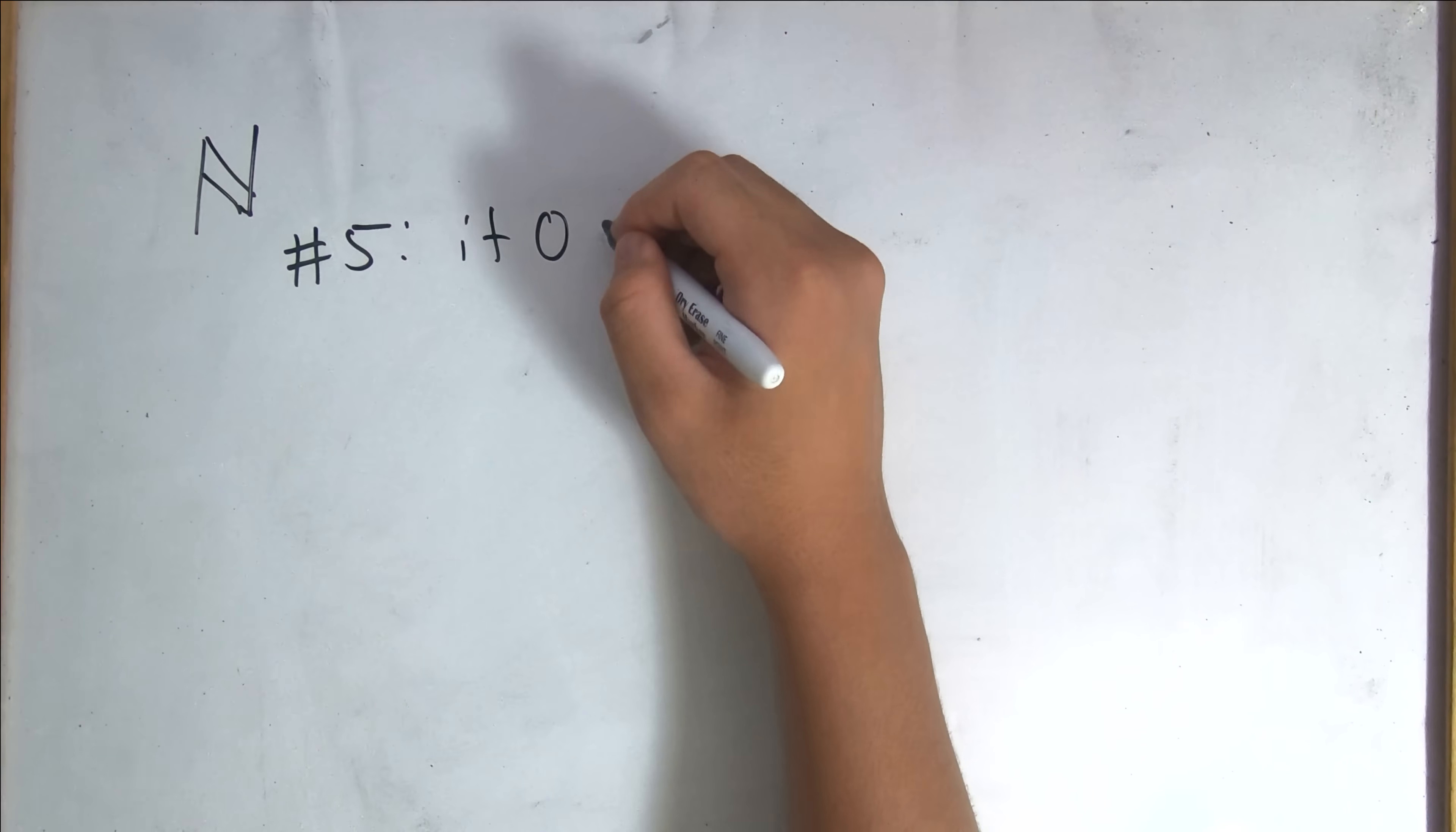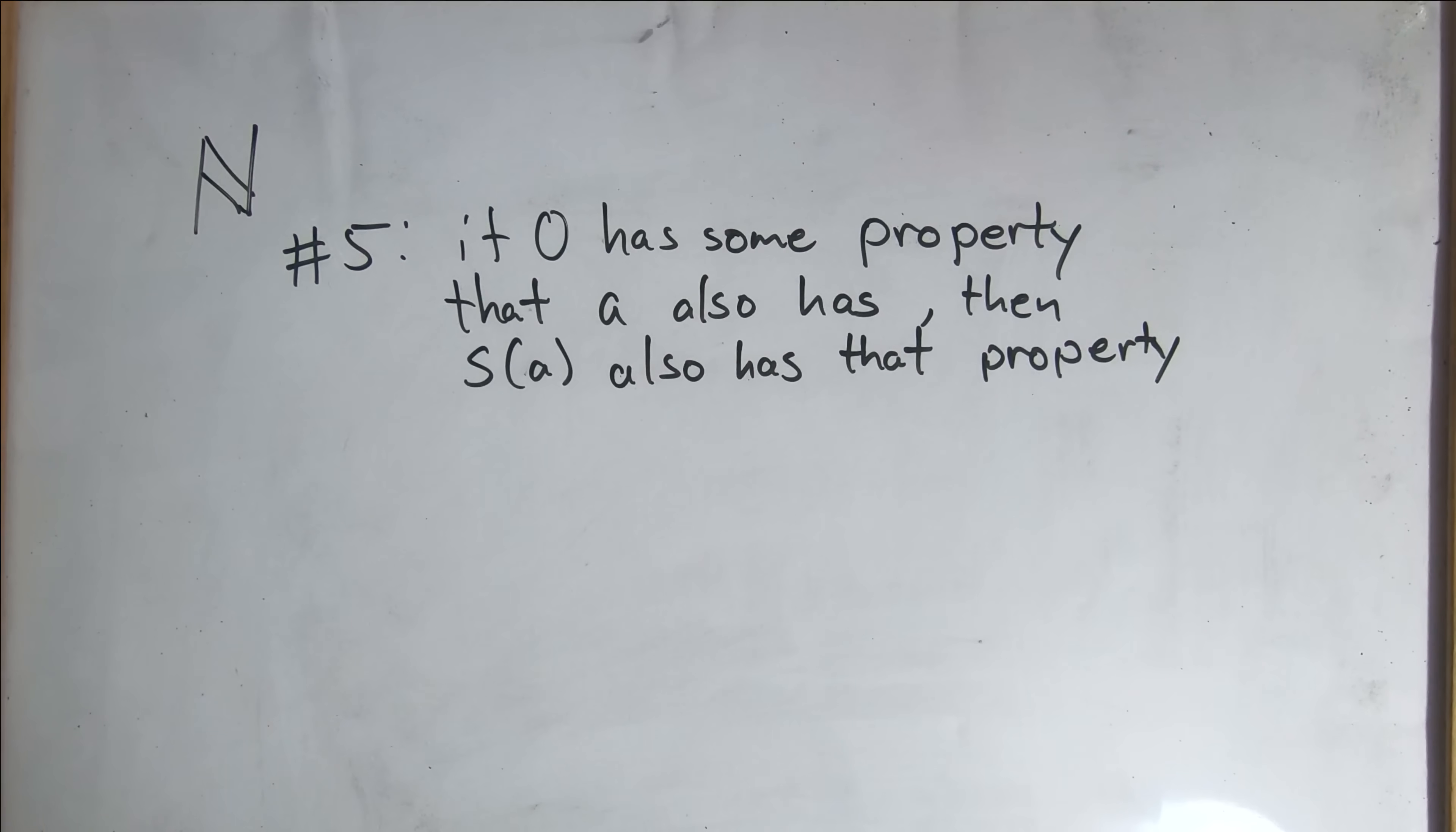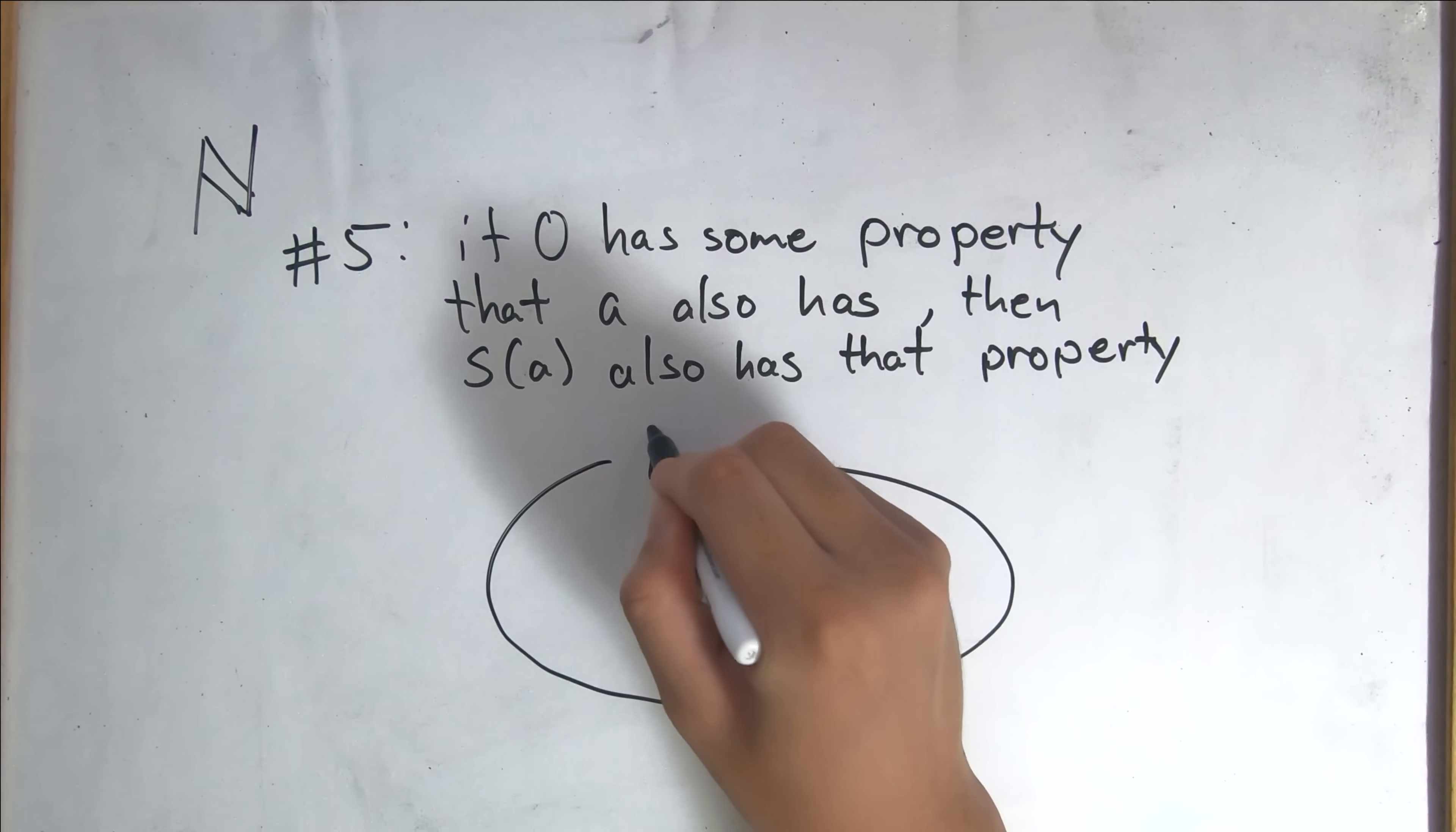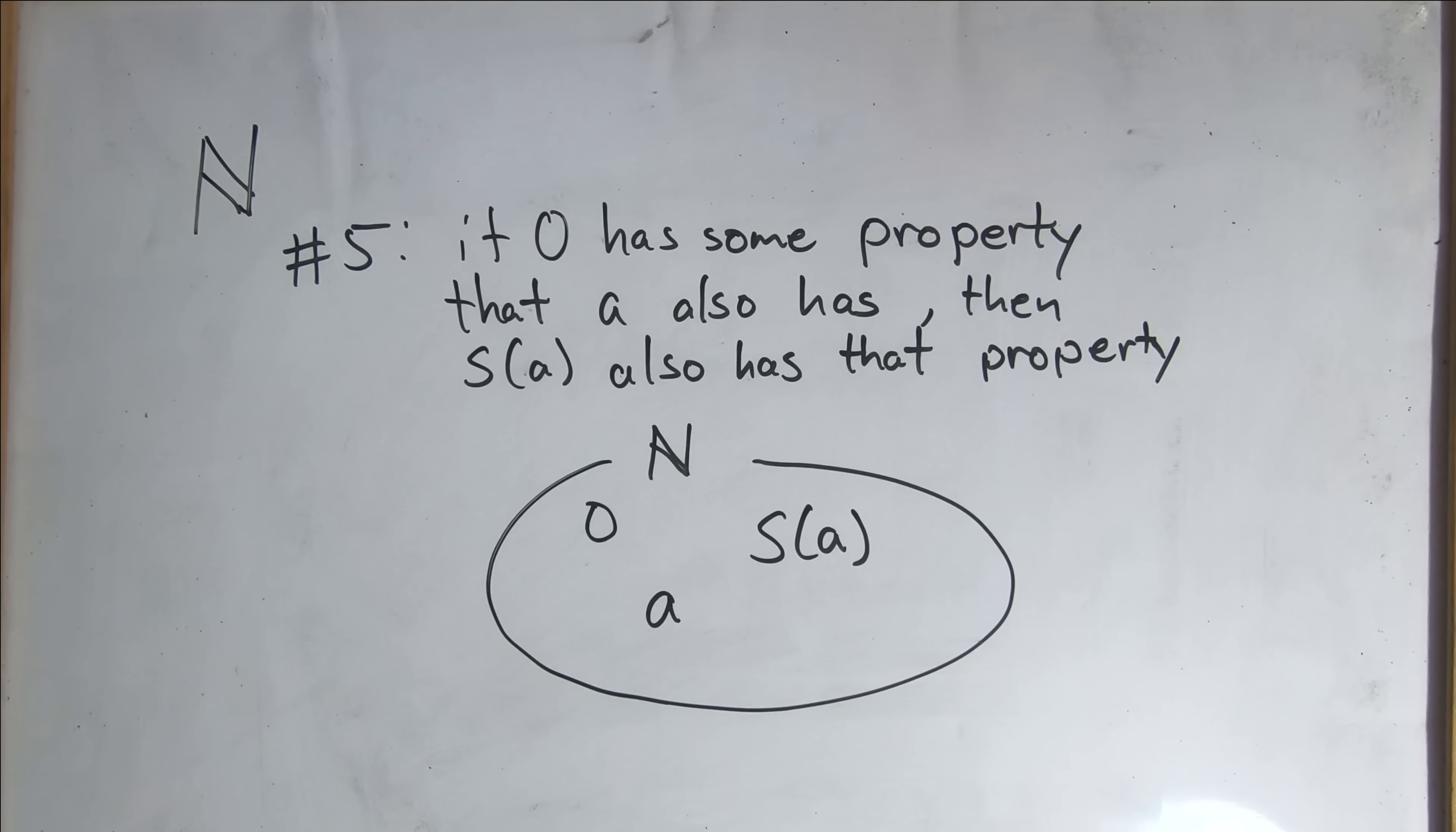Number 5. If zero has some property that a also has, where a is a number, then the successor of a also has that same property. Essentially, this is a foundational idea to what we commonly refer to as induction. But in simpler terms, all this is saying is that if zero is in the set of natural numbers, then for every natural number a in the same set, the successor of a is also a natural number. Think of a very large bag with all the natural numbers. If zero is inside it, and if a is inside it, then by this definition, we also know that the successor of a must also be in the set of natural numbers.